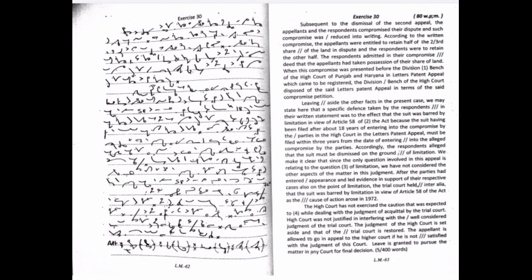We make it clear that since the only question involved in this appeal is relating to the question of limitation, we have not considered the other aspects of the matter in this judgment. After the parties had entered appearance and laid evidence in support of their respective cases, also on the point of limitation, the trial court held inter alia, that the suit was barred by limitation in view of Article 58 of the act as the cause of action arose in 1922.